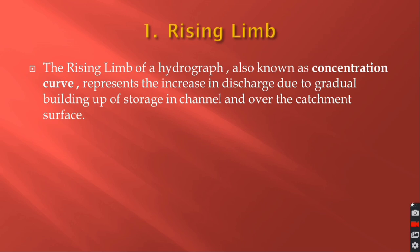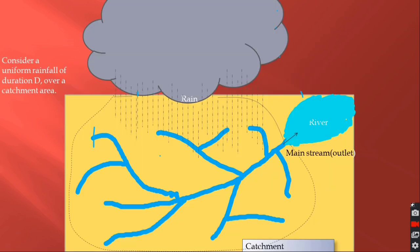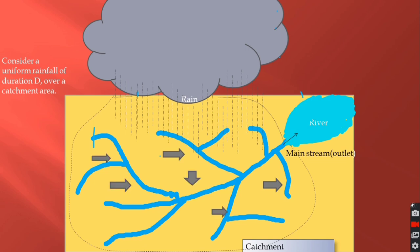The rising limb of a hydrograph, also known as the concentration curve, represents the increase in discharge due to gradual building up of storage in the canal and over the catchment surface. After the initial losses of water through infiltration, interception, evaporation, etc., water collects on the catchment surface and in the channels, and then this water begins to run off towards the catchment outlet. The area nearest to the outlet will produce runoff first.